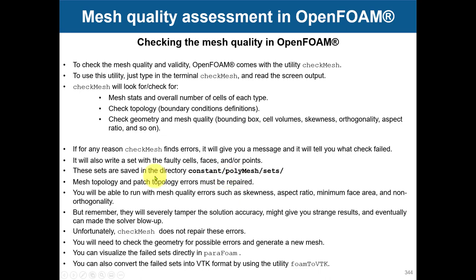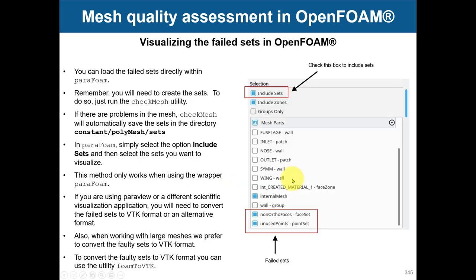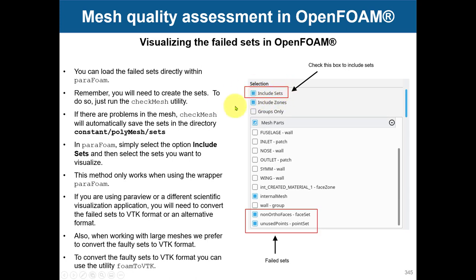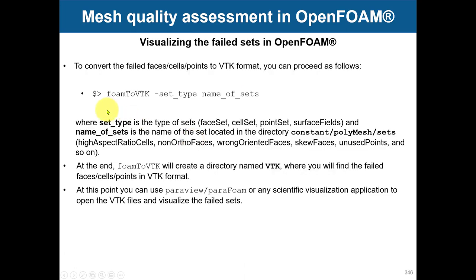Visualizing those faulty sets helps you diagnose where you need finer meshes. You can do it in two ways: launch ParaFoam and when you launch it check the option 'include sets' — you can then directly access the non-orthogonal faces and unused points sets. The other way is to convert those sets to VTK format, so you can use Paraview or ParaFoam built-in. These direct set options are only available with the full ParaFoam plugin.